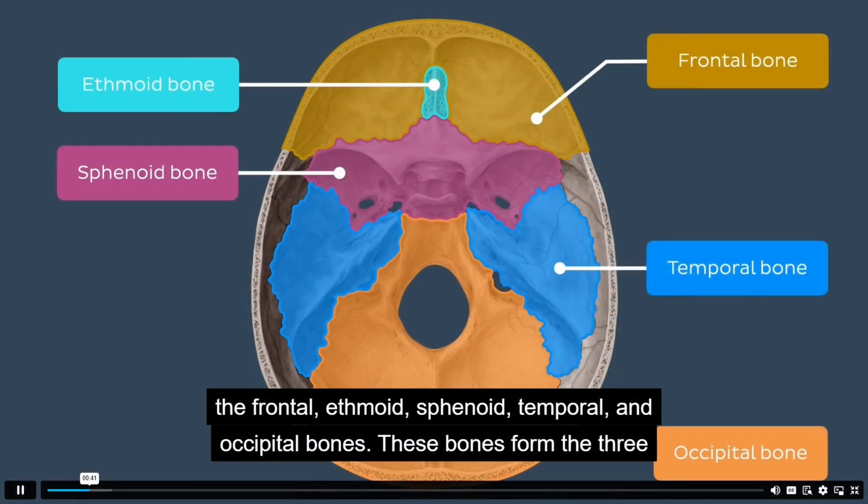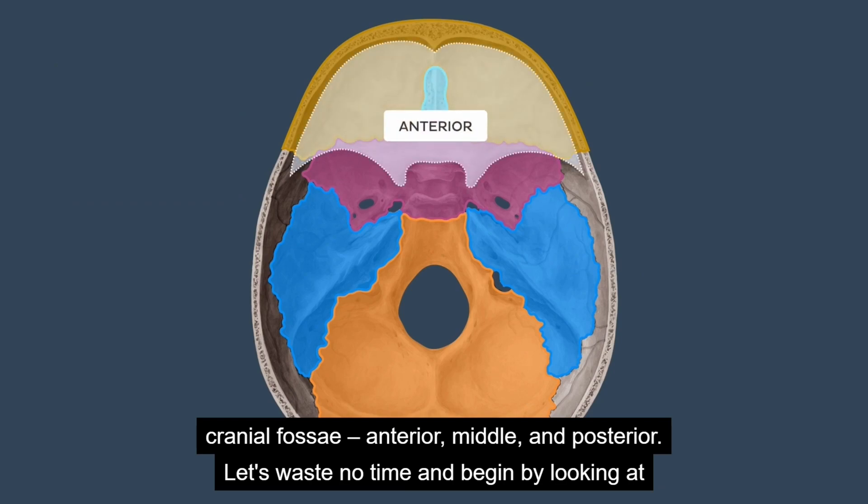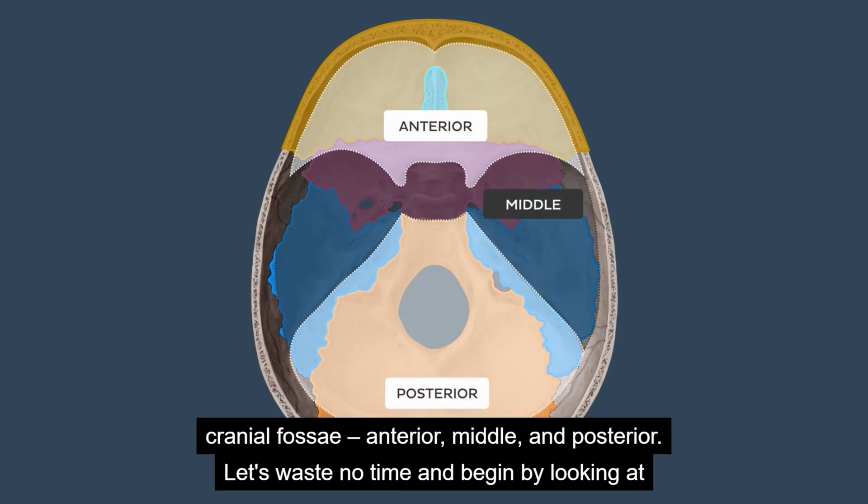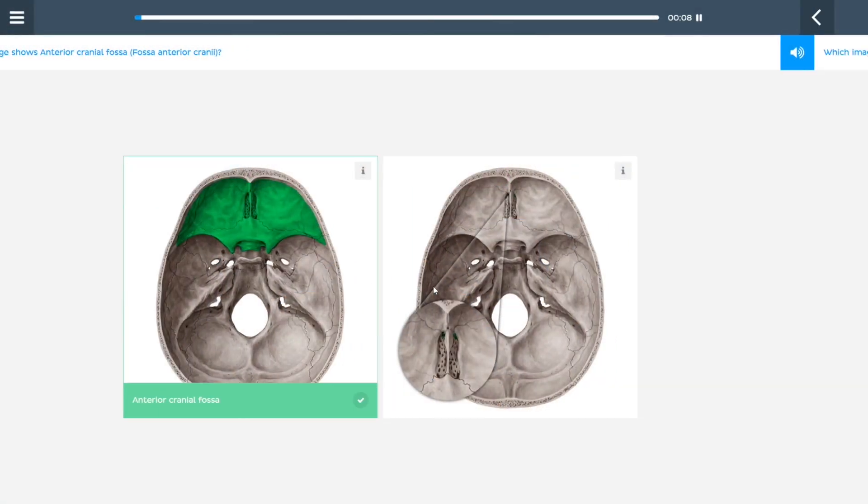With Kenhub Premium you get full access to their structured study units, like this one on the cranial fossae. Each unit includes in-depth video tutorials with captions, speed controls, and transcripts. Spaced repetition quizzes that adapt to your progress and help you retain information longer.